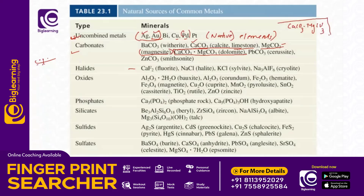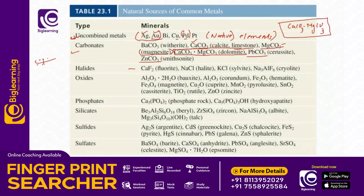The structure of dolomite combines calcium and magnesium carbonates. Zinc carbonate (ZnCO3) and lead carbonate are also important carbonate ores. So the carbonates covered are: CaCO3 (limestone), MgCO3 (magnesite), CaCO3·MgCO3 (dolomite), zinc carbonate, and lead carbonate (cerussite).